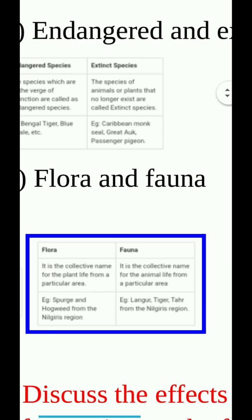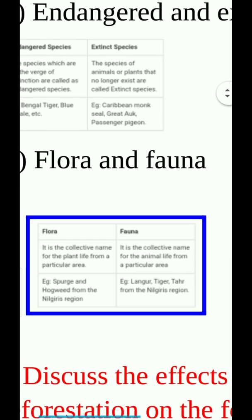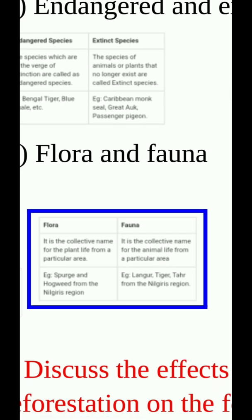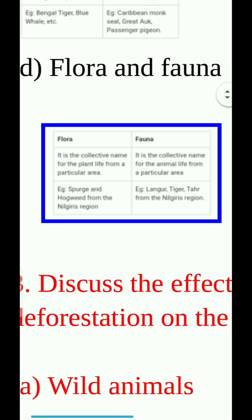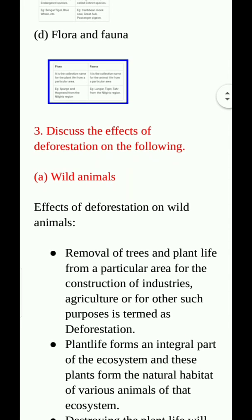Flora and fauna. Flora: it is a collective name for the plant life from a particular area. Fauna: it is a collective name for the animal life from a particular area. Example of flora: spore and hogweed from the Nilgiri region. Example of fauna: langur, tiger, and tahr from the Nilgiri region.